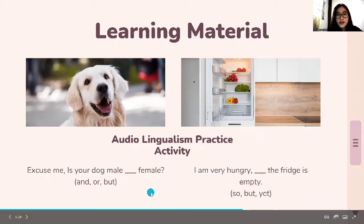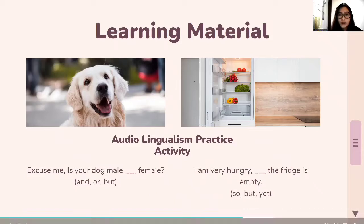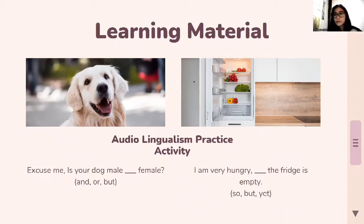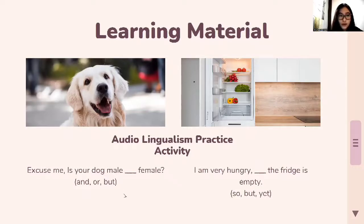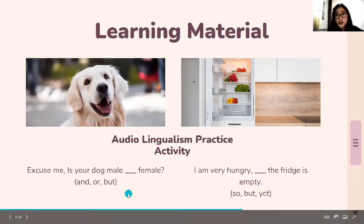The choices for this sentence are: 'and,' 'or,' and 'but.' By the way, the conjunctions provided here are the basic conjunctions — the FANBOYS — which stands for: For, And, Nor, But, Or, Yet, and So. For this sentence, the correct conjunction is 'or,' because the sentence represents a choice between two options.